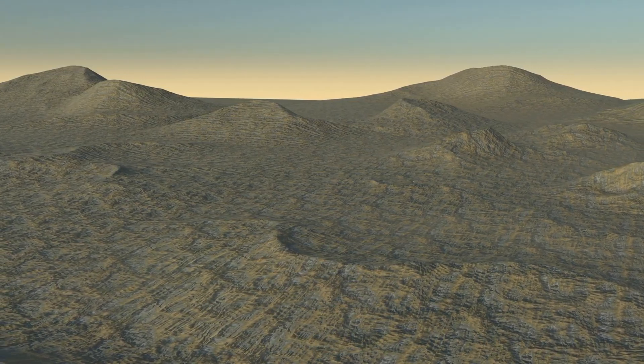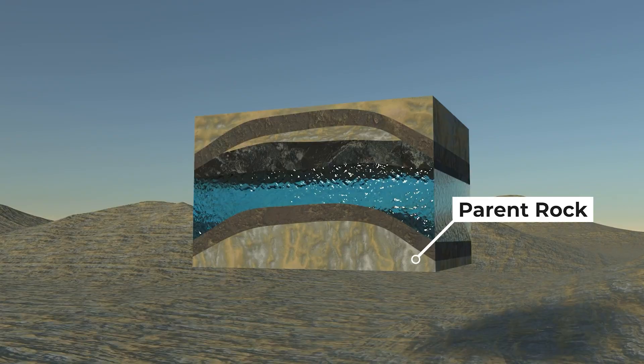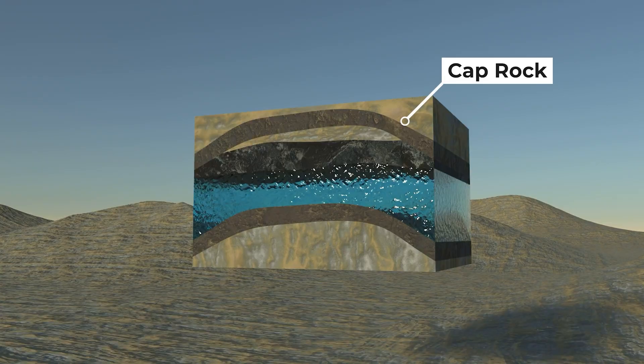The creation of an oil field requires three main elements. Parent rock is a layer of sedimentary rock rich in organic material — this is where the transformation of organic matter into hydrocarbons occurs through heat and pressure. Reservoir rock is a porous and permeable rock formation, such as sandstone or limestone, which allows oil to accumulate and move. Cap rock is an impermeable layer, often consisting of clay or evaporites, that seals the reservoir and prevents hydrocarbons from escaping to the surface.